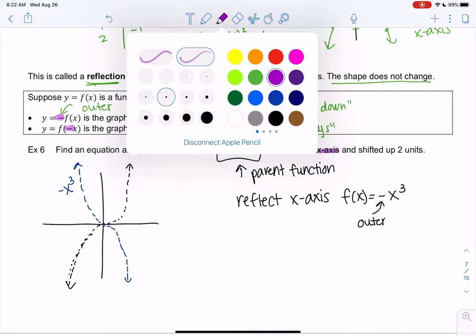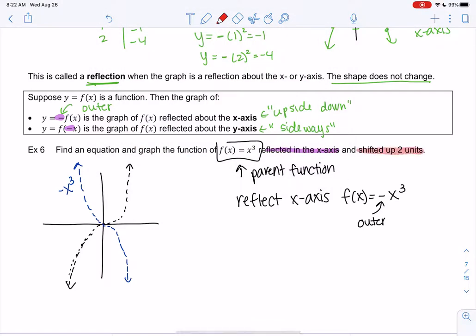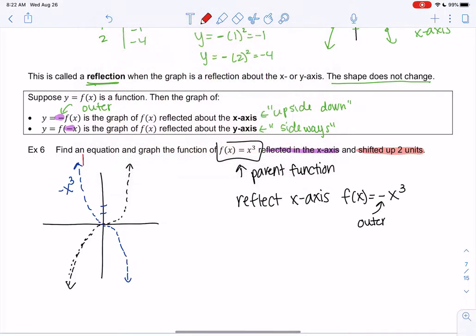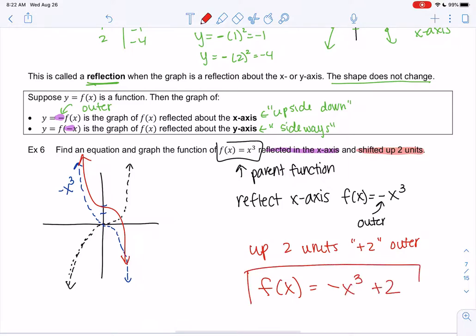And then what's next? And then we're going to shift up 2 units. So we go up 2. Let's do this in a different color. So it looks like that. So up 2. And then in case we don't remember, that's adding 2. Outer. Up and down is an outer move. So our new function will be negative x cubed plus 2 to shift it up. So combining those previous transformations.